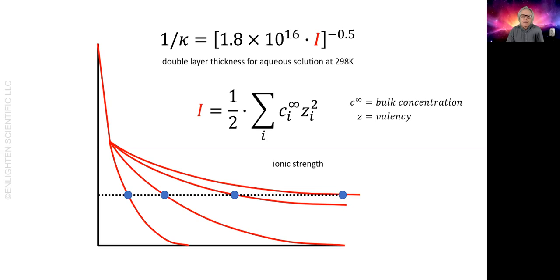I is the ionic strength and is a measure of the concentration of all of the ionic species present, taking into account their valences, since polyvalent ions are more effective at screening than monovalent ones.